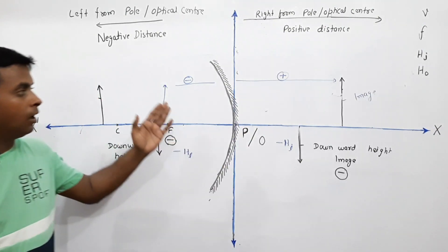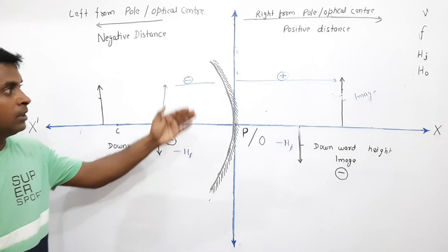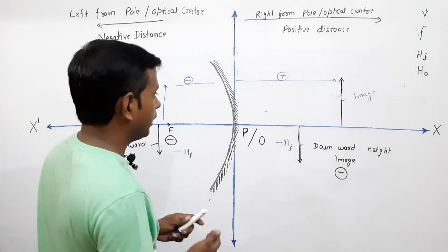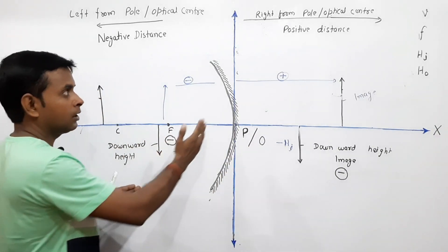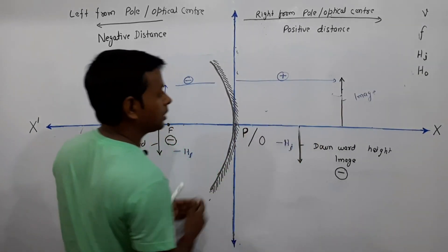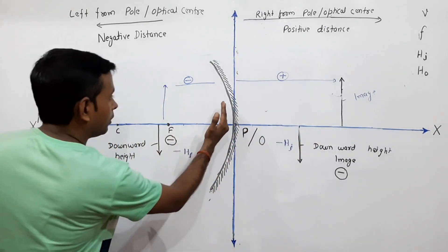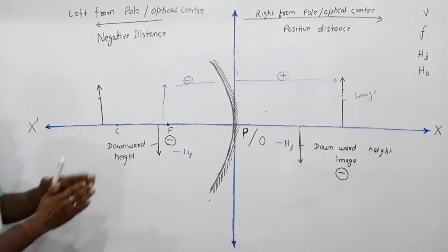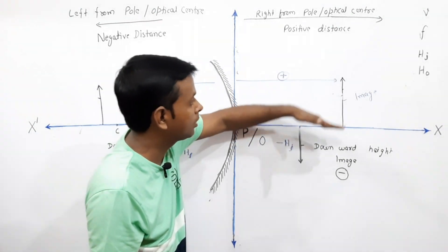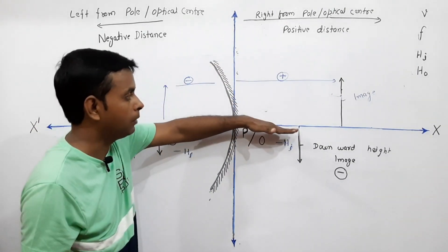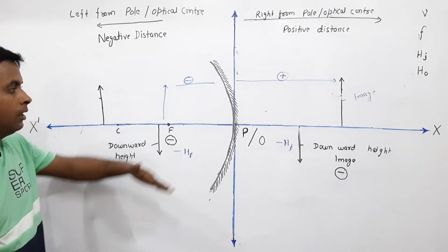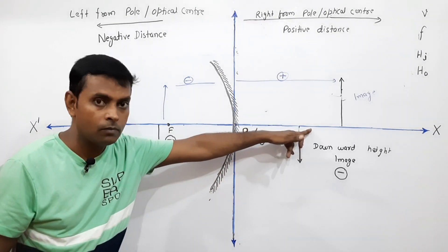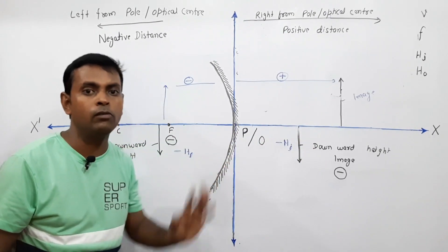This applies no matter whether it is a lens or a mirror — the concept remains the same. To summarize: any distance, whether of image or object, if it is to the right of the pole or optical center, is taken as positive. If it is to the left, it is taken as negative. Any height of image or object above the main axis is positive, and any height below the main axis is negative.